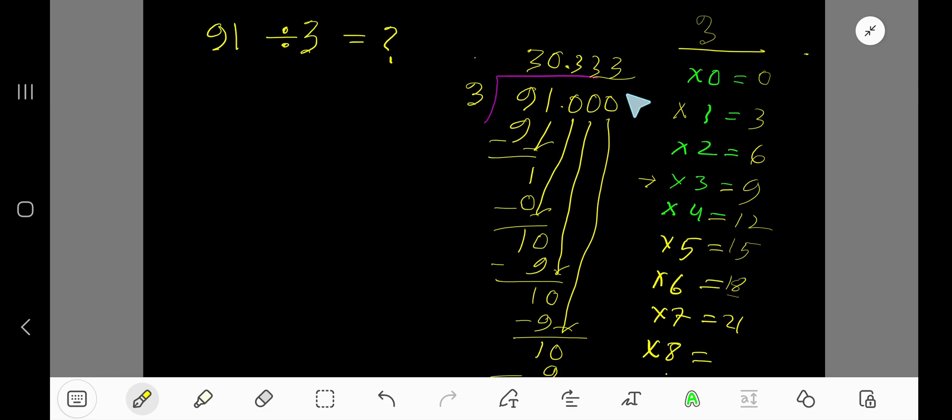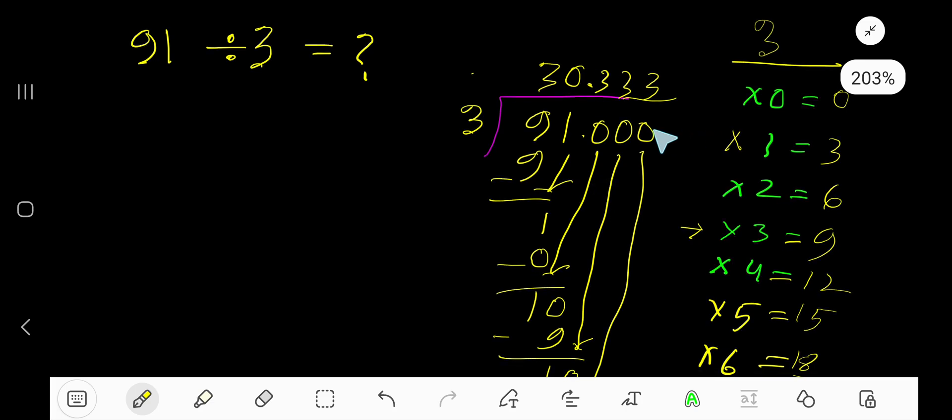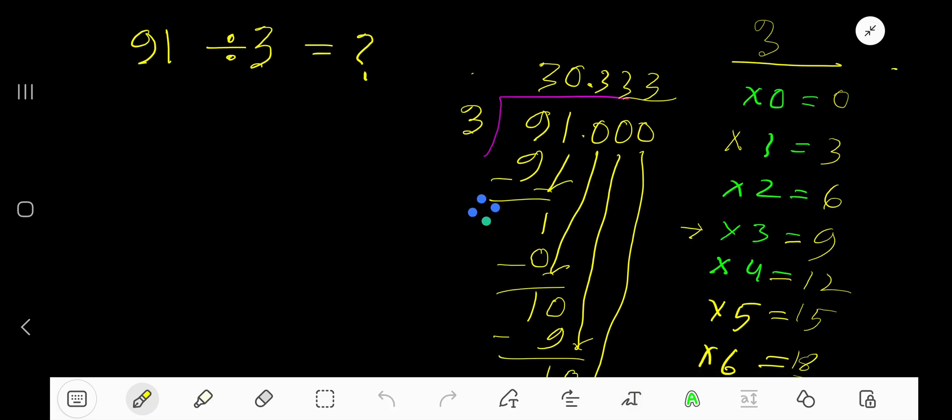Since we have gotten 3 digits after decimal, we can now place 3 dot.